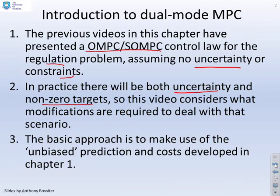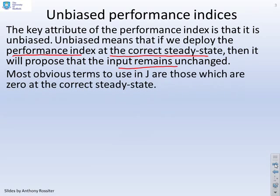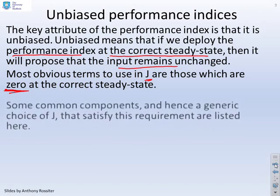The basic approach we're going to take is the same as was given in Chapter 1. That is, we're going to look at the use of unbiased predictions and unbiased costs. The key attribute of the performance index is that it's unbiased, meaning that if we deploy the performance index at the correct steady state, then it will propose that the input remains unchanged.